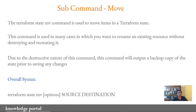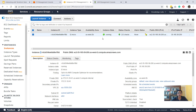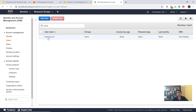The second important subcommand is move. The Terraform state move command is used to move items in a Terraform state. This command is specifically useful if you intend to rename an existing resource without destroying and recreating it. Due to the destructive nature of this command, it will output a backup copy of the state prior to saving any changes. In AWS, we have one EC2 instance running and an IAM user called load balancer.